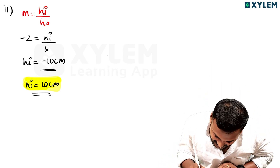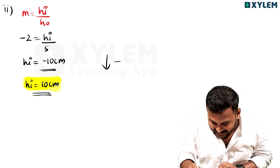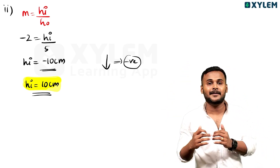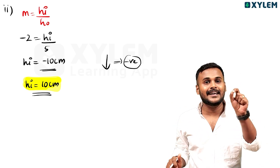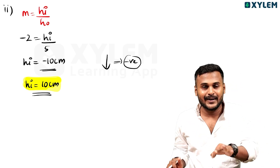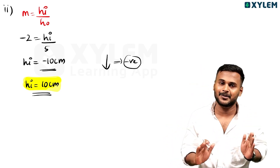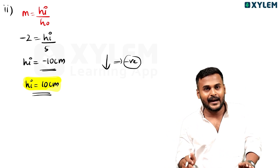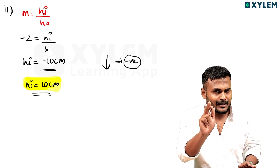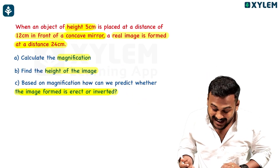That real image is going to be inverted. The minus sign is because of the sign convention — it is negative, meaning the image is inverted. hi equal to minus 10 centimeter, where the minus indicates it is an inverted real image.